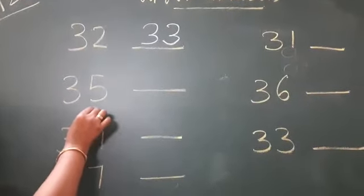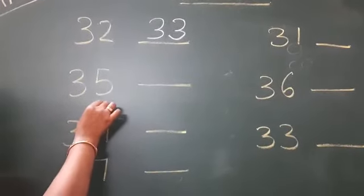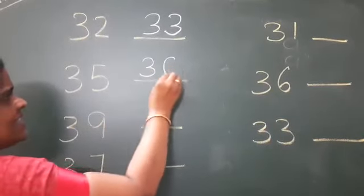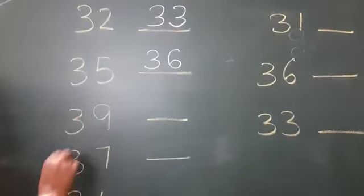Then 3, 5, 35. Which number comes after 35? 36. 3, 6, 36.